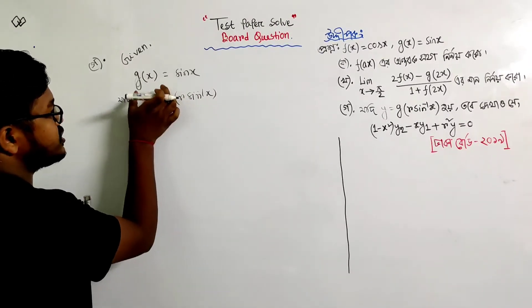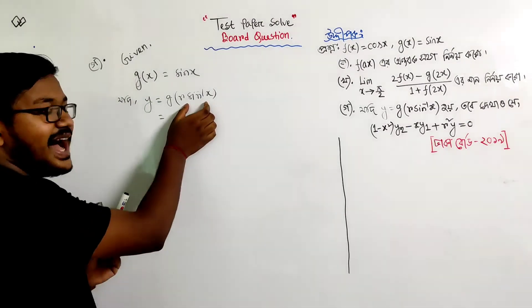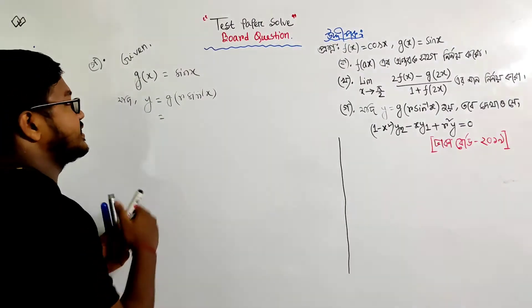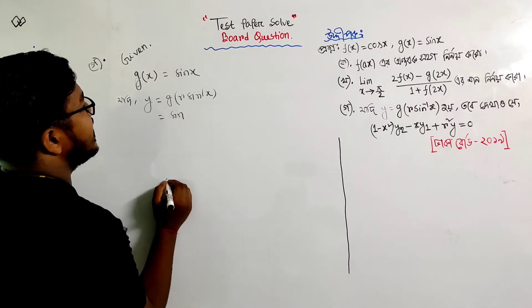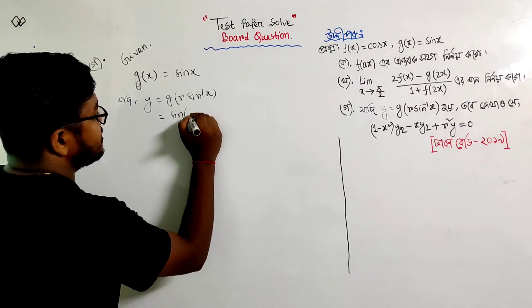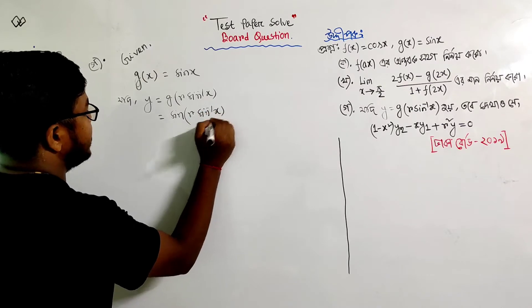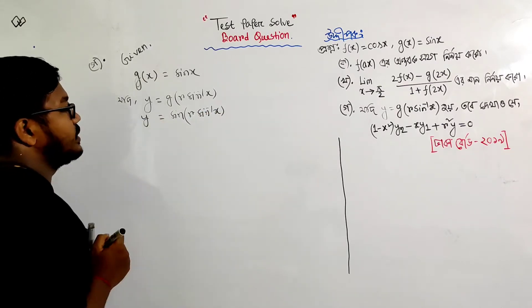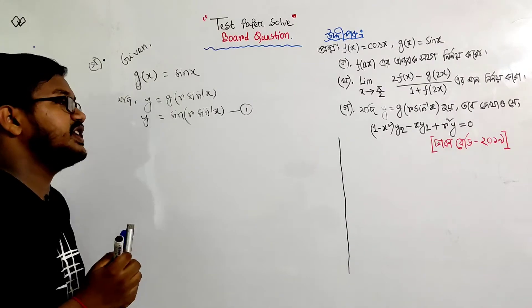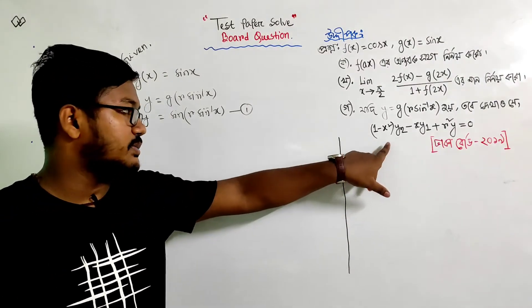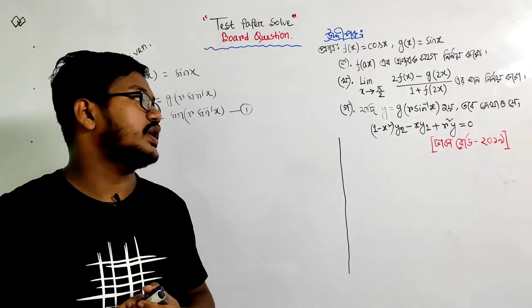So g(x) is equal to sin(x), meaning x equals r·sin⁻¹(x). So y equals g(r·sin⁻¹(x)) = sin(r·sin⁻¹(x)). This is the value of y and now we have to differentiate.